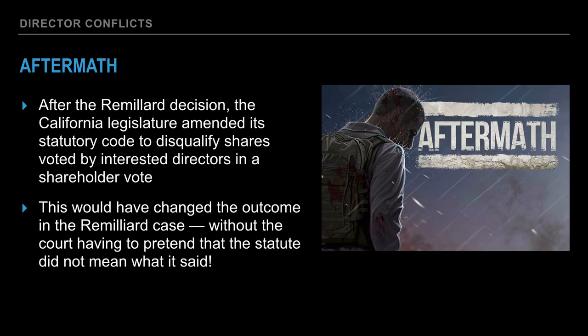After the Remilliard decision, the California legislature amended its statutory code Section 820 to disqualify shares voted by interested directors in a stockholder vote. This would have changed the outcome of the case without the court having to pretend the statute did not mean what it said. However, I think the court did get it right from a higher principles standpoint — sometimes courts don't follow a bad law.